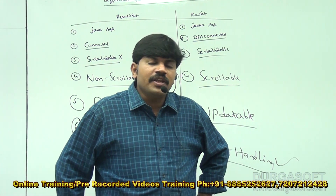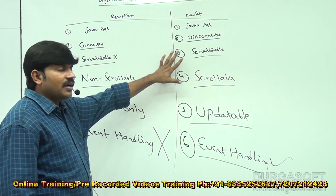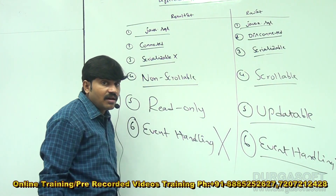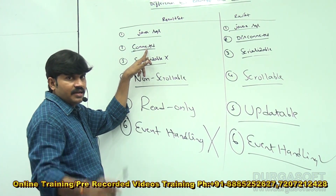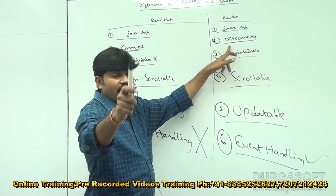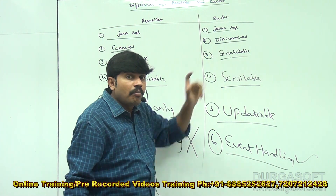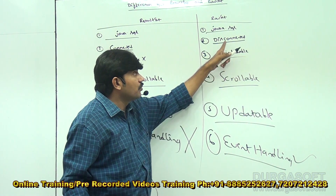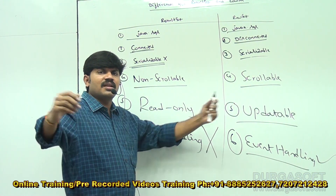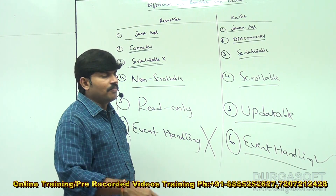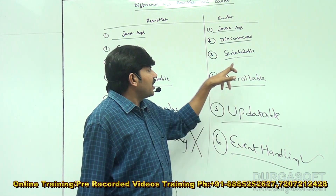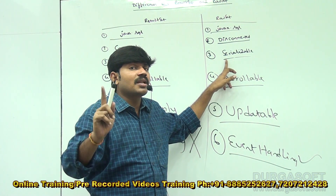To summarize: ResultSet is present inside java.sql package; RowSet is present inside javax.sql package. By default, ResultSet is connected — a database connection must be there to use it. But by default RowSet is disconnected — without a database connection you can use RowSet, but this rule is not applicable for JdbcRowSet. ResultSet is not serializable — you can't send it across a network. But RowSet objects are serializable and can be sent across a network, except JdbcRowSet.